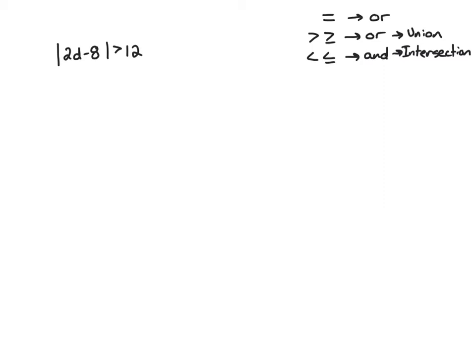The first thing I need to know is what does absolute value mean? Absolute value means the distance from 0. So this expression is greater than 12 places away from 0. We're not only comparing it to 12, but also to negative 12, because both of those numbers are 12 places away from 0. So I'll write it out without the absolute value to take care of both cases: 2d minus 8 is greater than 12, and 2d minus 8 is less than negative 12.